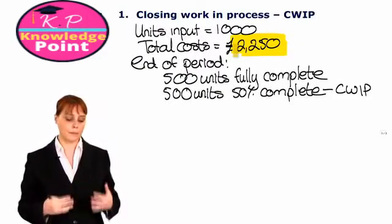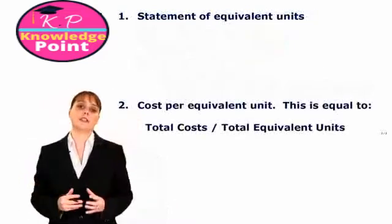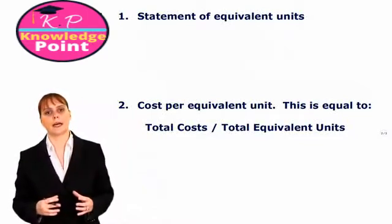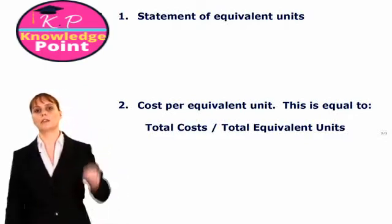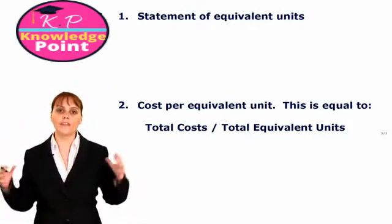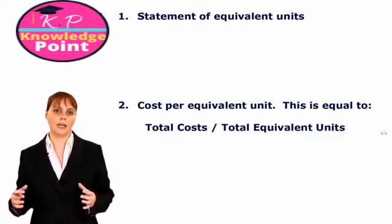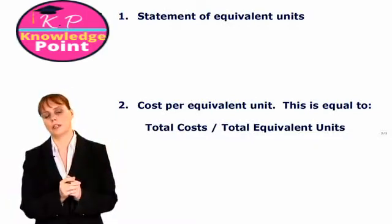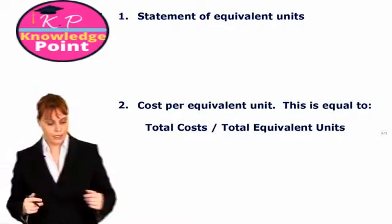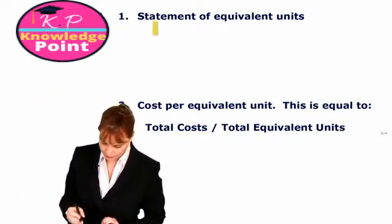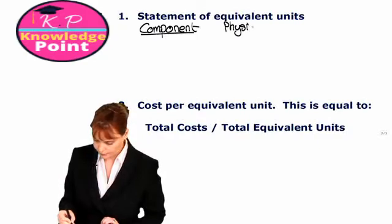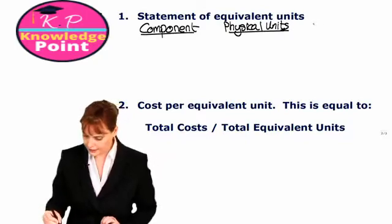We are going to look at these steps and apply them to this exercise. In the first step, we calculate what is called a statement of equivalent units. In this step, what we are doing is looking at each of our components — our output to finished goods and our closing work in progress — and calculating the equivalent work done on those units. All we look at here is the number of physical units in that component and the percentage completion of those units.